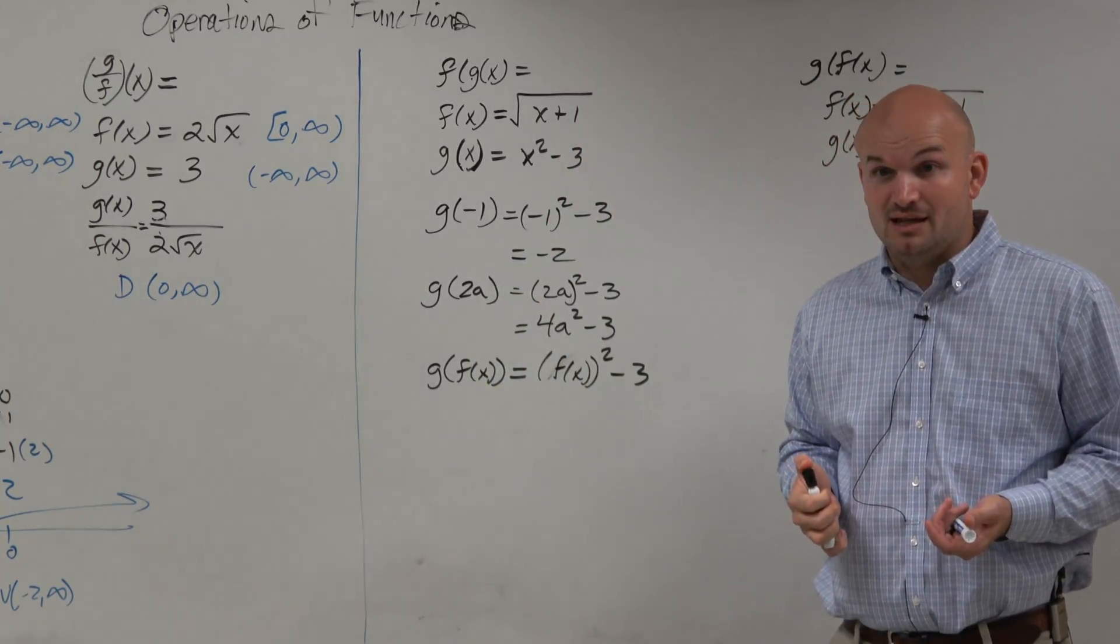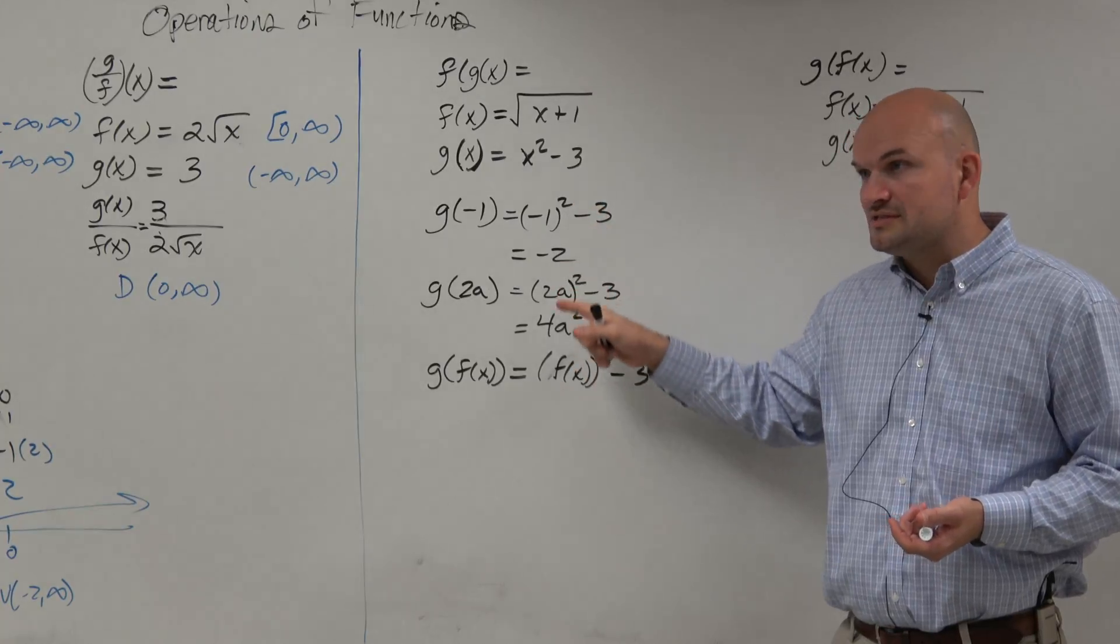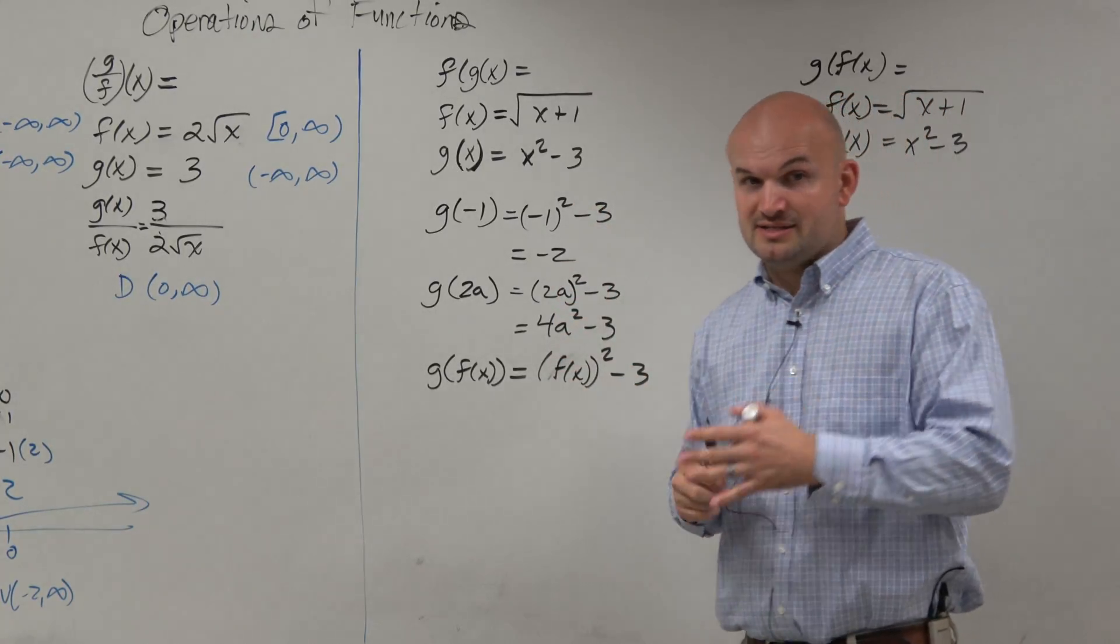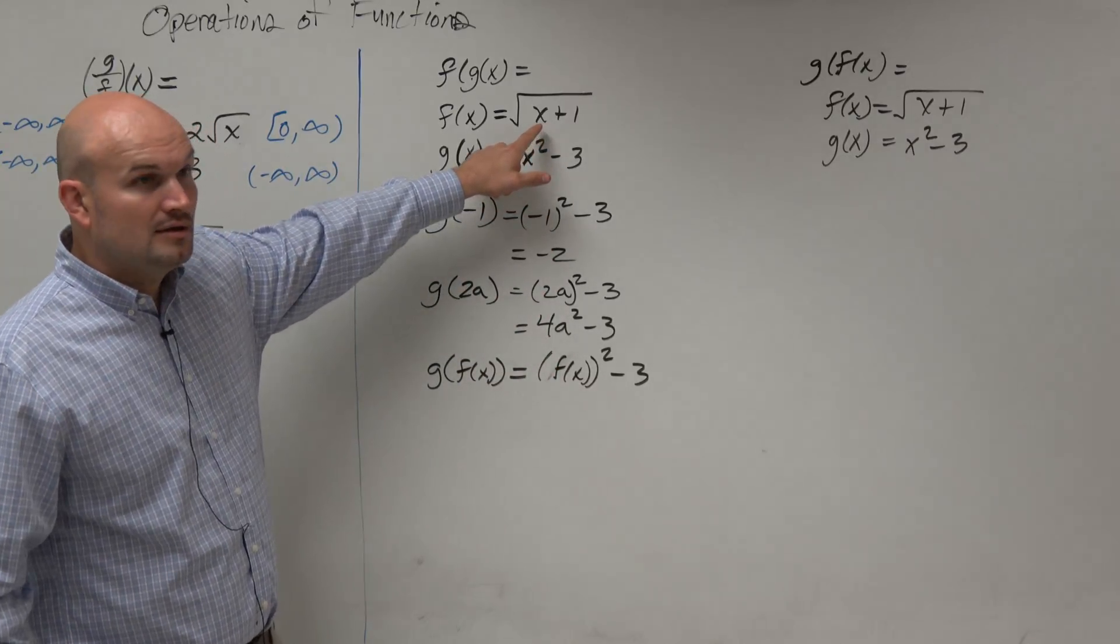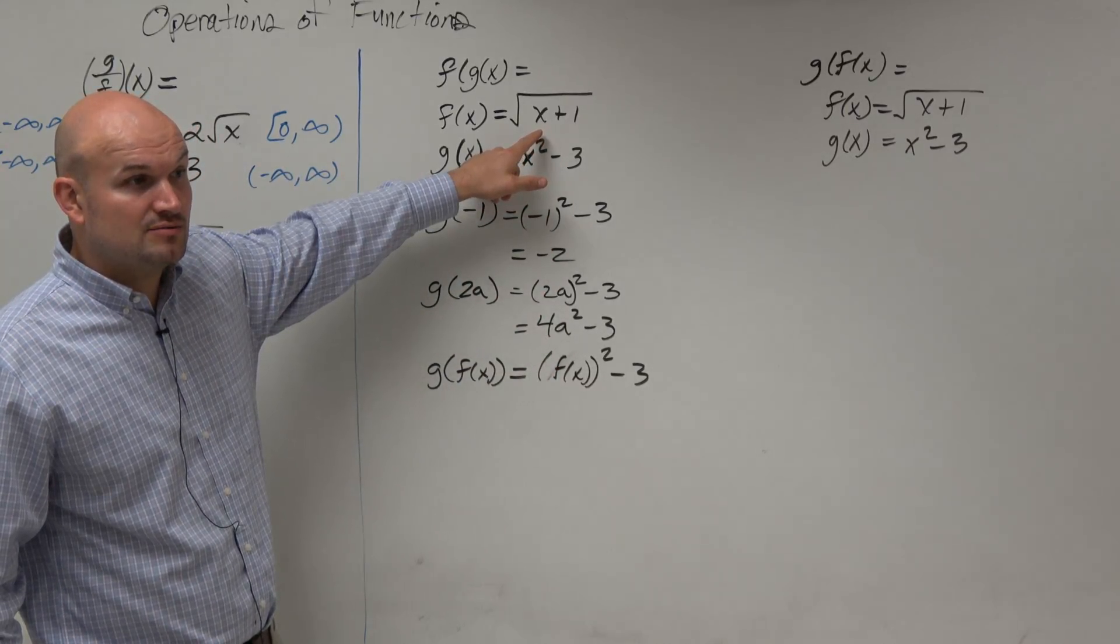Now, it looks kind of confusing. I'm not going to lie to you. But it follows the same pattern. And the cool thing about this is we actually have a defined value for f of x, don't we? We have a defined value for f of x, which is?